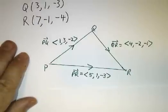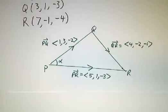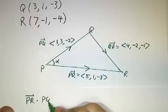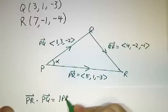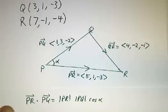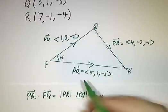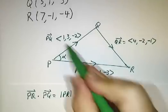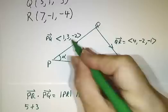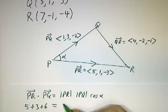So what do we want? The first thing we're gonna do is we're gonna try to figure out the angle at P, and we know that if we take PR dotted into PQ, that has to give us the length of PR times the length of PQ, times the cosine of the angle between them. So figuring out PR dot PQ is easy.